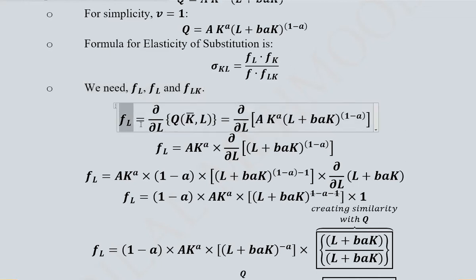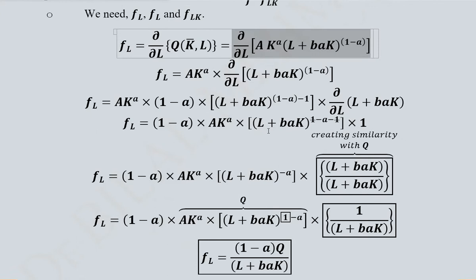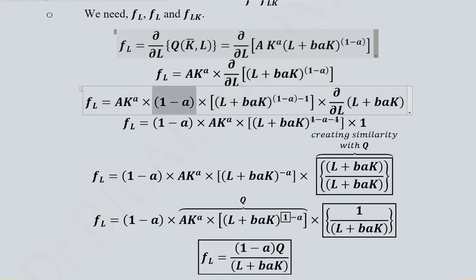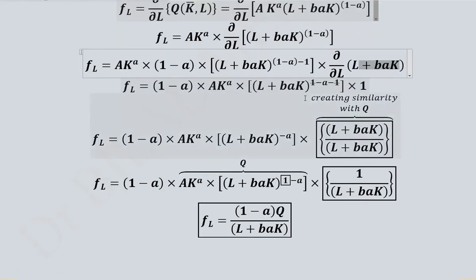We start with FL, which is the marginal product of labor in the VES production function. We differentiate with respect to labor, treating K as a constant. Constants and variables treated as constant appear outside the derivative sign, while the remaining term containing labor is inside. We apply the power rule — the power reduces by 1 — and arrive at the derivative.